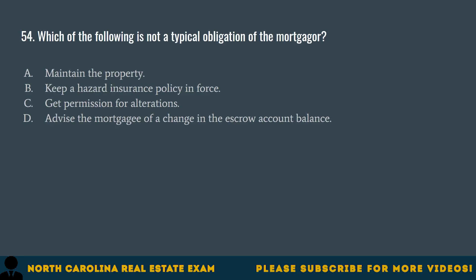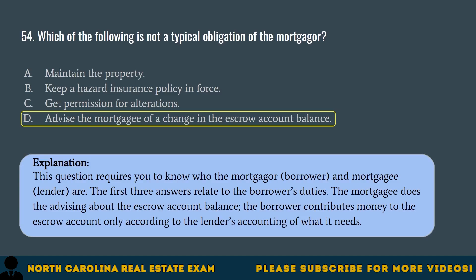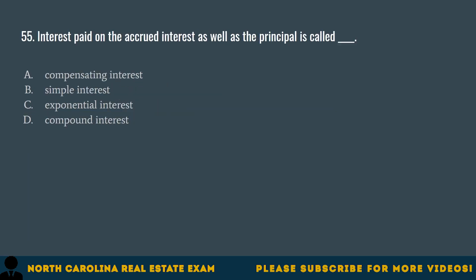Question 54. Which of the following is not a typical obligation of the mortgager? A. Maintain the property. B. Keep a hazard insurance policy in force. C. Get permission for alterations. D. Advise the mortgagee of a change in the escrow account balance. The correct answer is D. Advise the mortgagee of a change in the escrow account balance. This question requires you to know who the mortgager (borrower) and mortgagee (lender) are. The first three answers relate to the borrower's duties. The mortgagee does the advising about the escrow account balance. The borrower contributes money to the escrow account only according to the lender's accounting of what it needs.